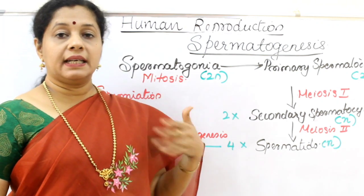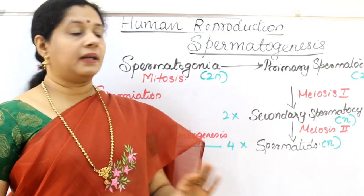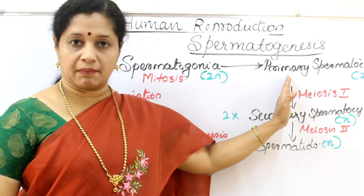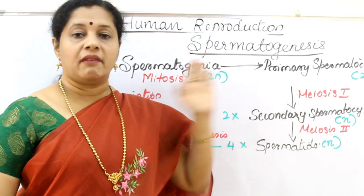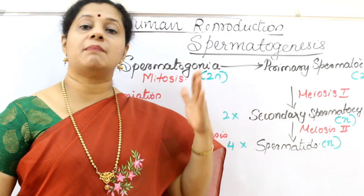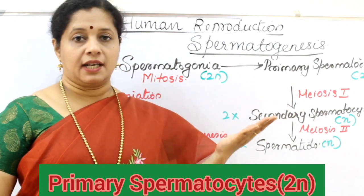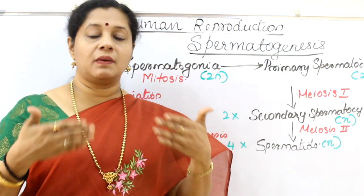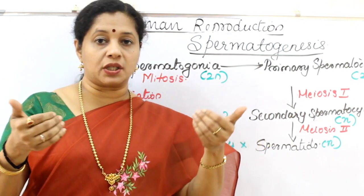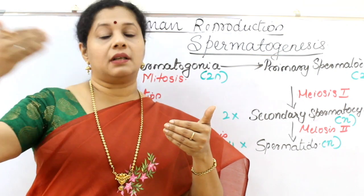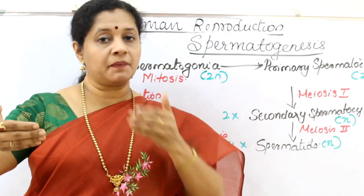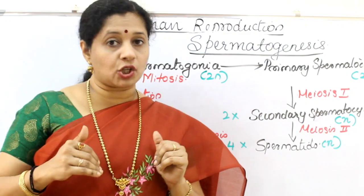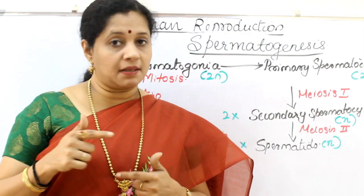Once they increase their number, some of them will turn into another type of cell called a primary spermatocyte, whereas the other cells in that batch will continue dividing. So all the cells multiplied will take up two routes — one will go to the process of formation of sperm, and the other keeps on dividing, otherwise the process will stop. The process is continuous in males.